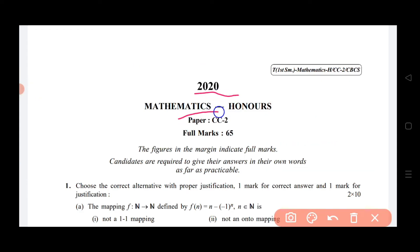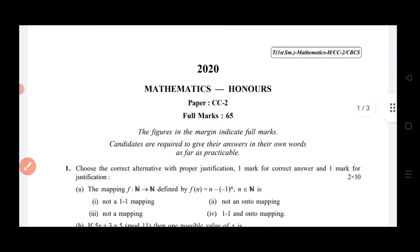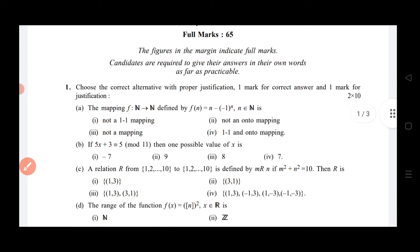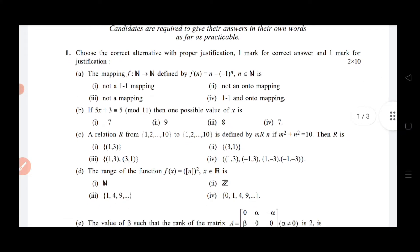2020 Mathematics Honours paper CC2, full marks 65. This Mathematics Honours question paper is from 2020, sorry 2022. Full marks 65. The figures in the margin indicate full marks. If you have the question paper, you can easily see it here.